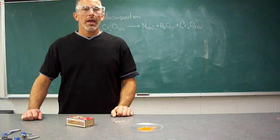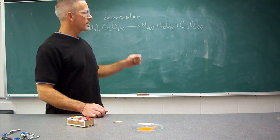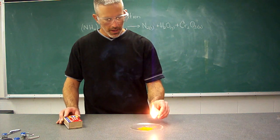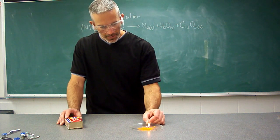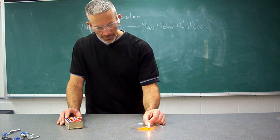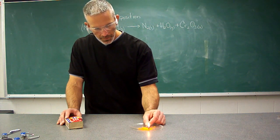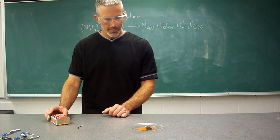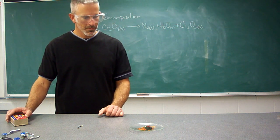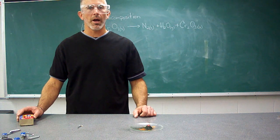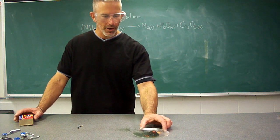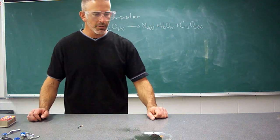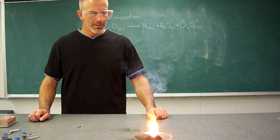We're going to use ammonium dichromate and break it down into nitrogen gas, water vapor, and chromium-3 oxide. To do that, we'll use some magnesium metal to get it kick-started. The ammonium dichromate started out as very bright orange crystalline particles, and as this decomposition reaction takes place, the gas being given off indicates a chemical change, as does the new product chromium-3 oxide. It almost looks like a miniature volcano.